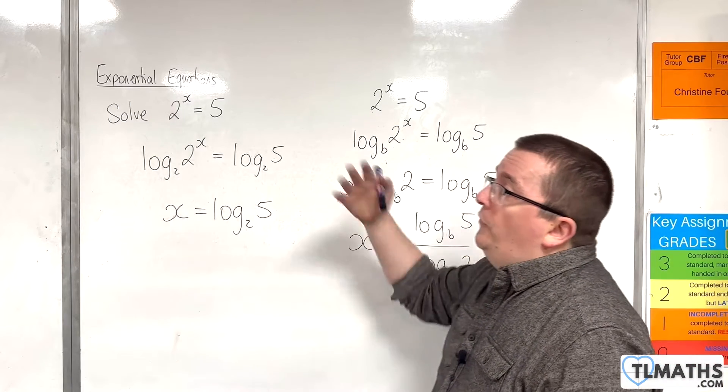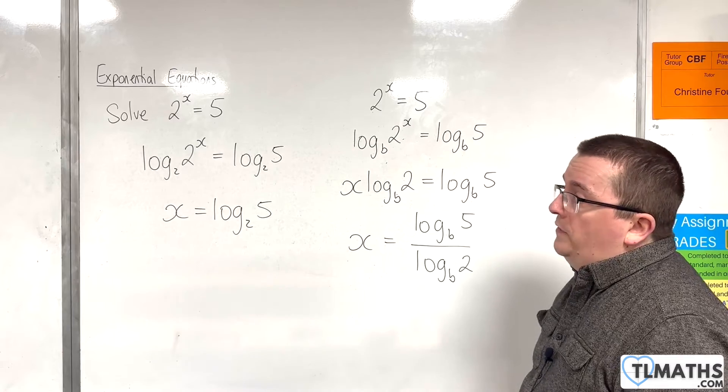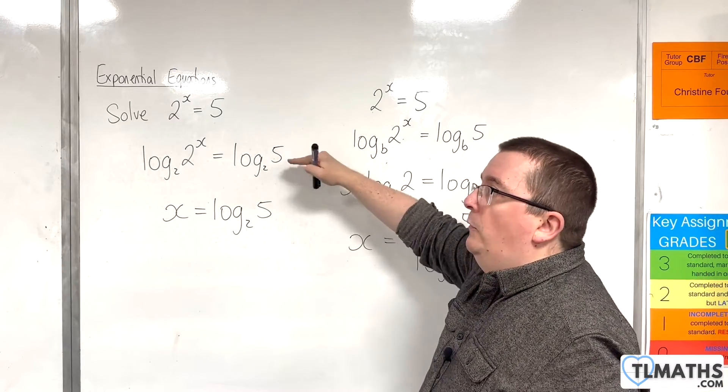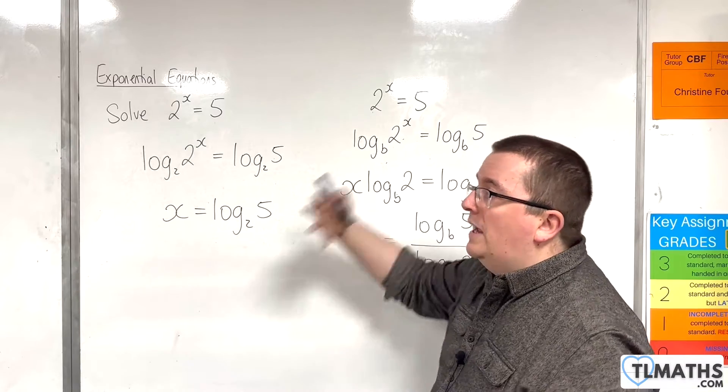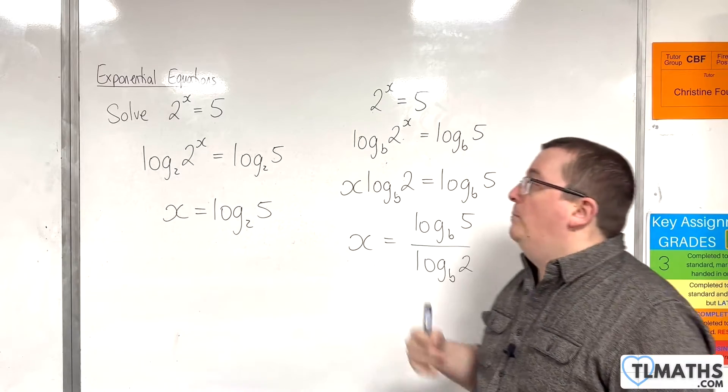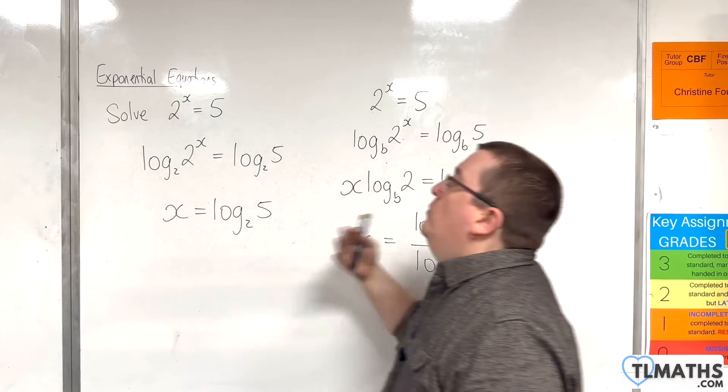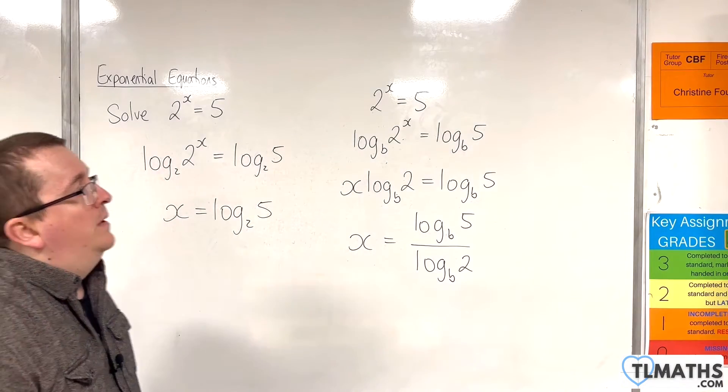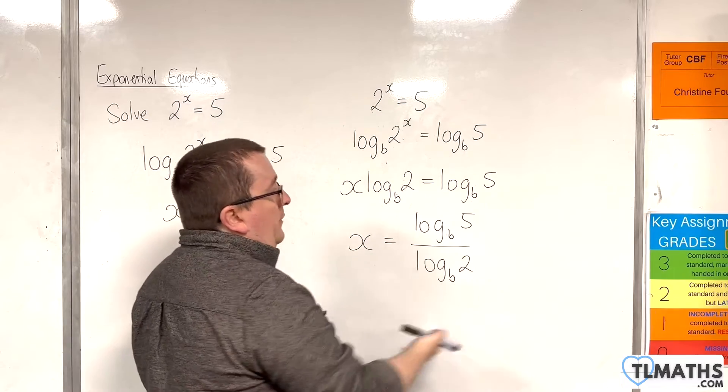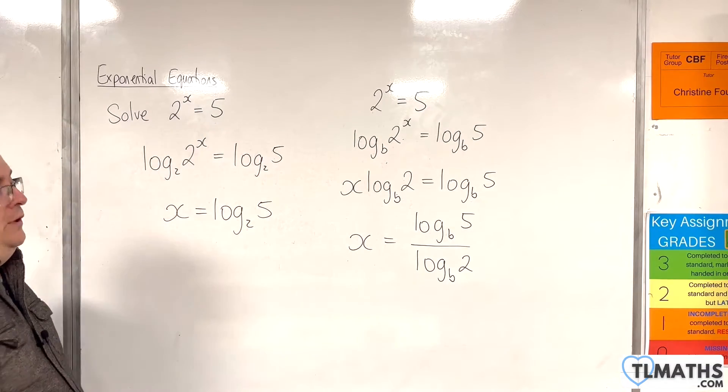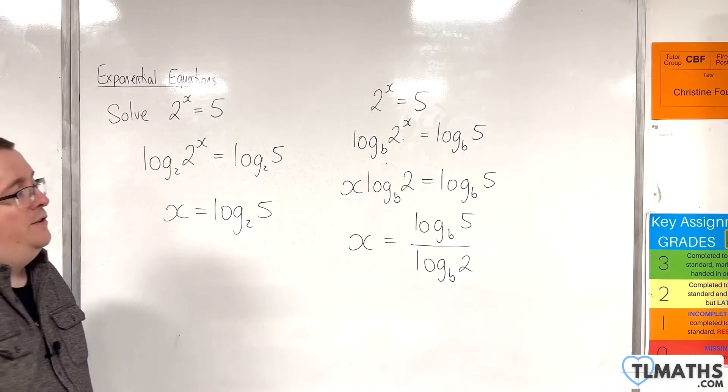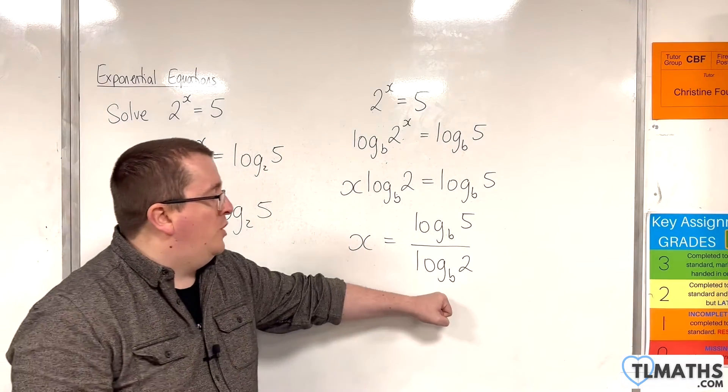Now, in the previous video, we were solving 2 to the x is equal to 5. We went from exponential form to logarithmic form, and showed that there was this intermediate step of logging both sides with base 2, and showed that actually you could choose any base you like here, as long as b is greater than 0 and b is not 1, of course. Then you can log both sides, and you can get an equivalent expression.